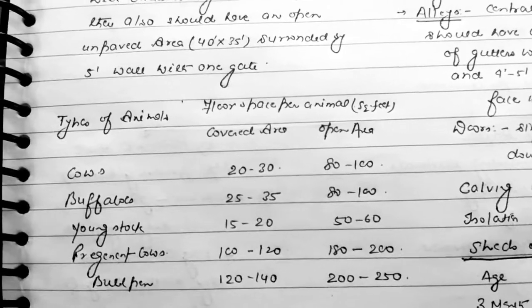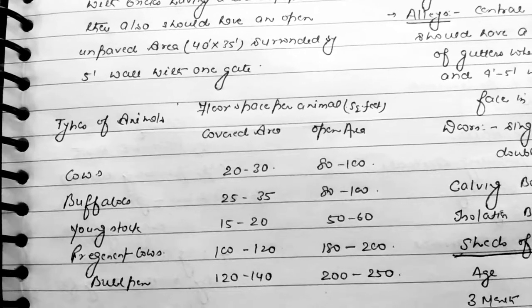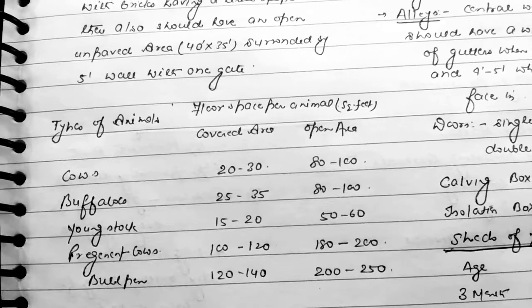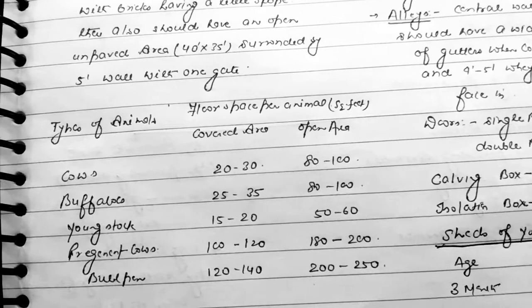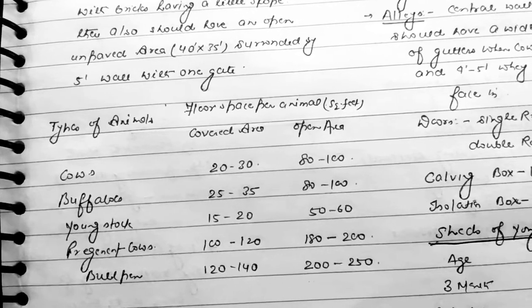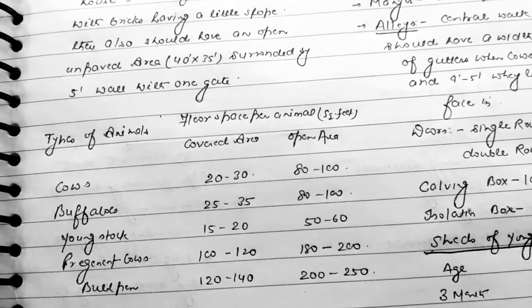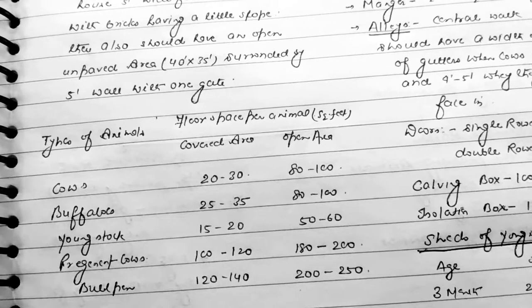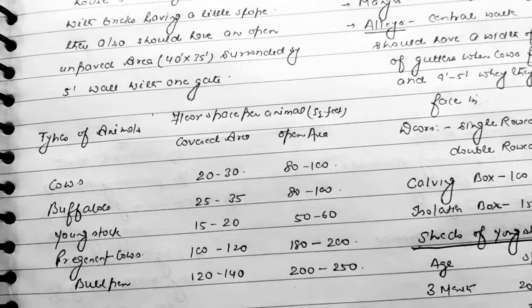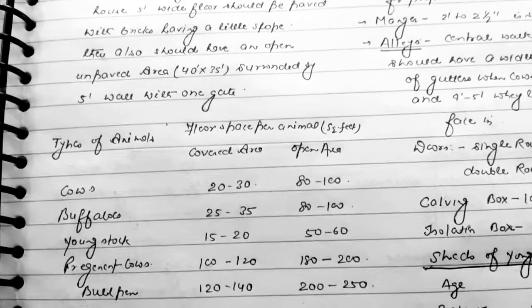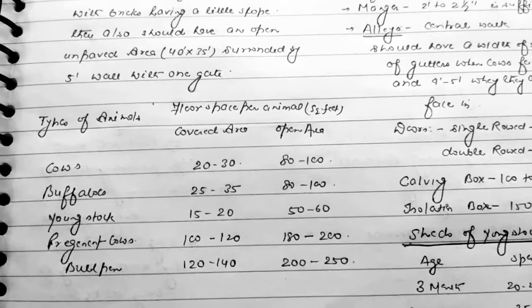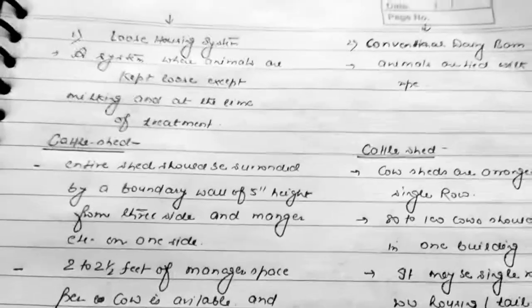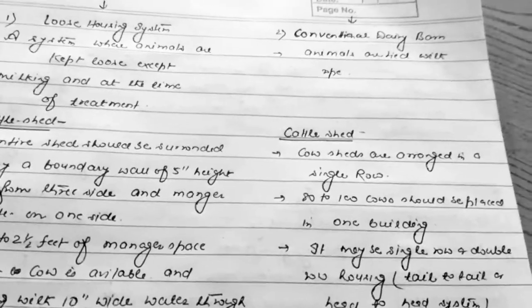Now, the floor space provided in the loose housing system: for cows, covered area is 20 to 30 square feet and open area is 80 to 100 square feet. For heifers, covered area is 25 to 35 square feet and open area is 80 to 100 square feet. For young stock, covered area is 15 to 20 square feet and open area is 50 to 60 square feet. For pregnant cows, covered area is 100 to 120 square feet and open area is 180 to 200 square feet.